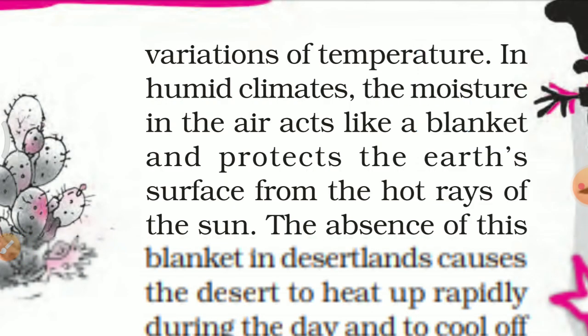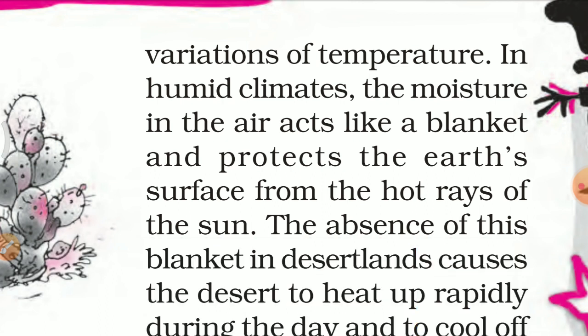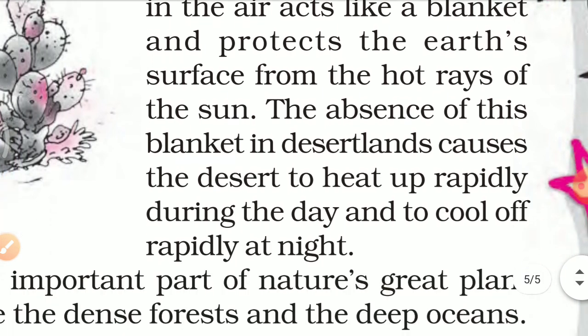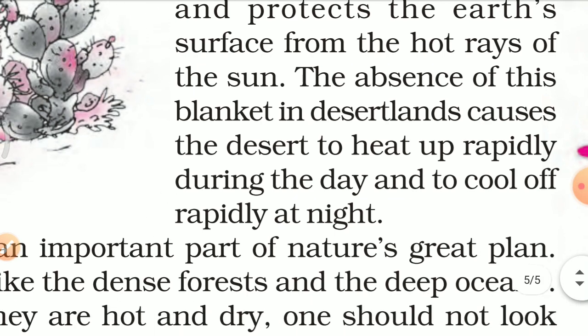The major features of all deserts are dryness and variation of temperature. In humid climates, the moisture in the air acts like a blanket, protecting the earth's surface from the hot rays of the sun. The absence of this blanket in desert land causes deserts to heat up rapidly during the day and to cool off rapidly at night.